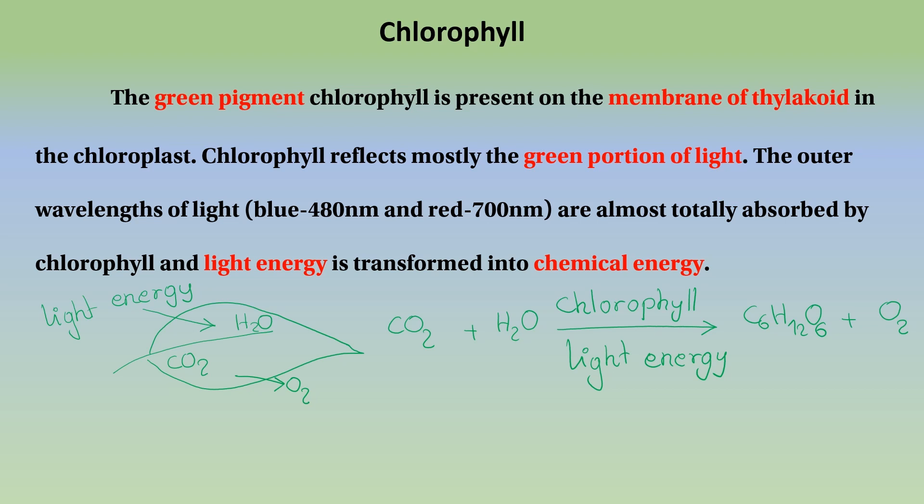Glucose is a small molecule of the food group and contains energy. The light energy changes into chemical energy. This process of photosynthesis involves a dark reaction and a light reaction. The light reaction and dark reaction together complete photosynthesis.